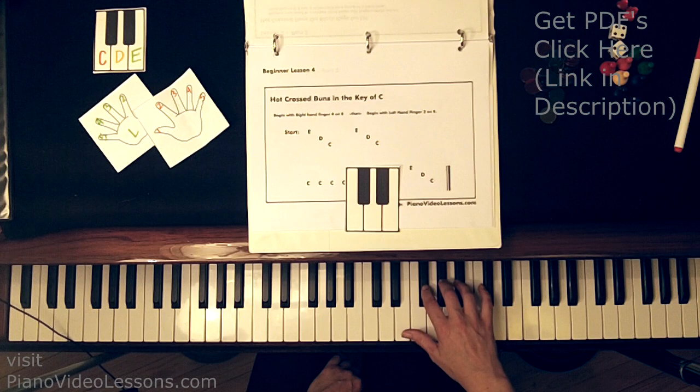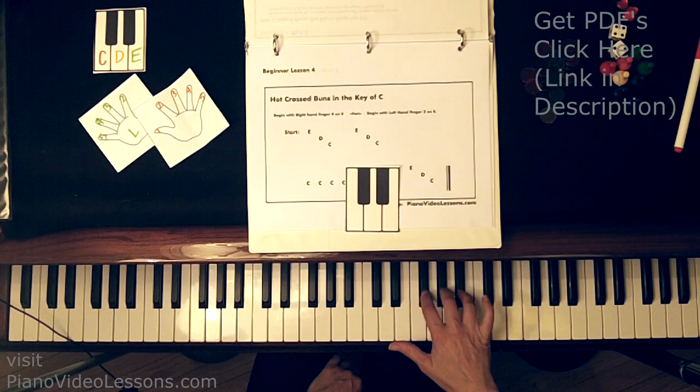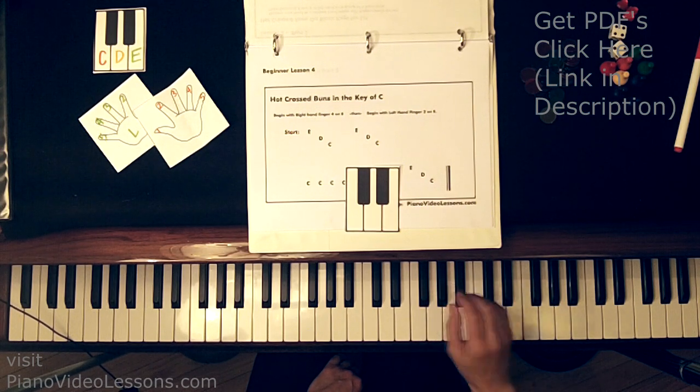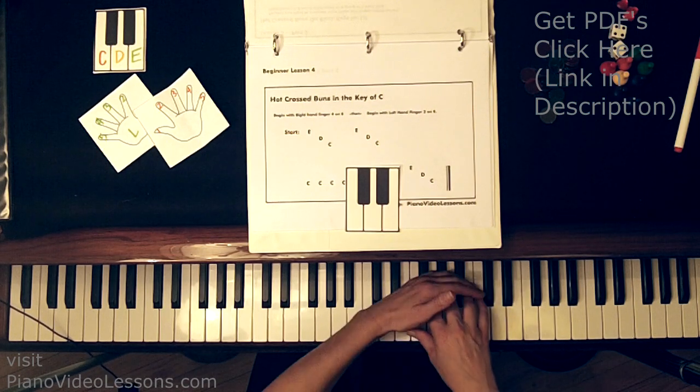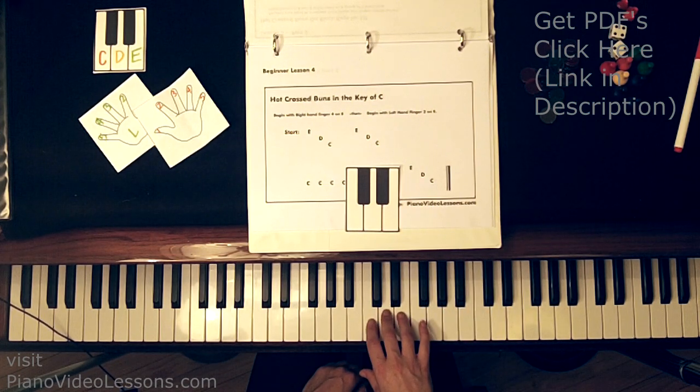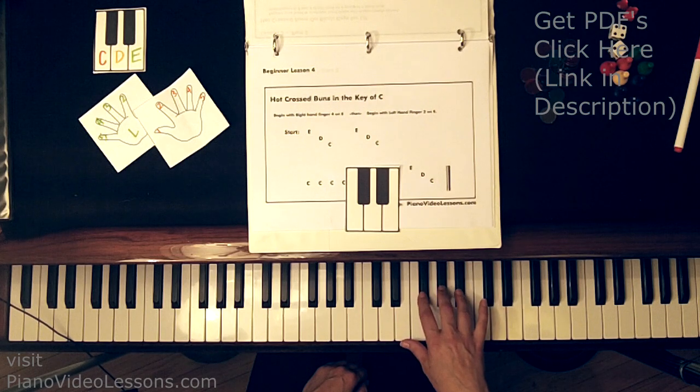So when you play on black keys, it's easy to stay on your fingertips because you kind of need to balance your fingers. But I want you to think of that same relaxed hand position with curved fingers and just move it over so that fingers 2, 3, and 4 are now on white keys.